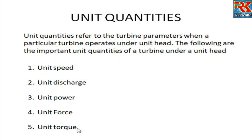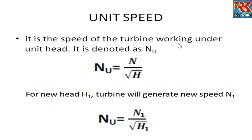If a turbine works under unit head, it will produce a corresponding unit speed, unit discharge, unit power, unit torque, and unit force. So when the turbine works under unit head, it works under all these unit quantities. Unit speed, unit discharge, unit power, unit force, unit torque — these are the unit quantities.